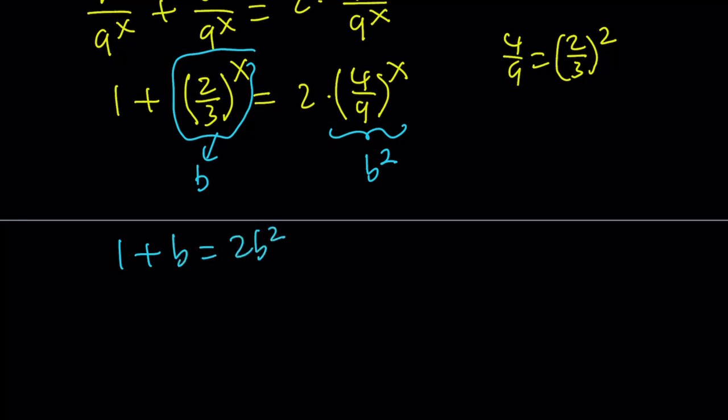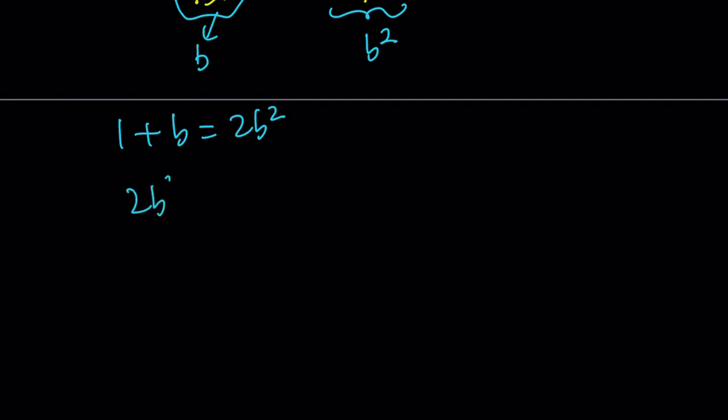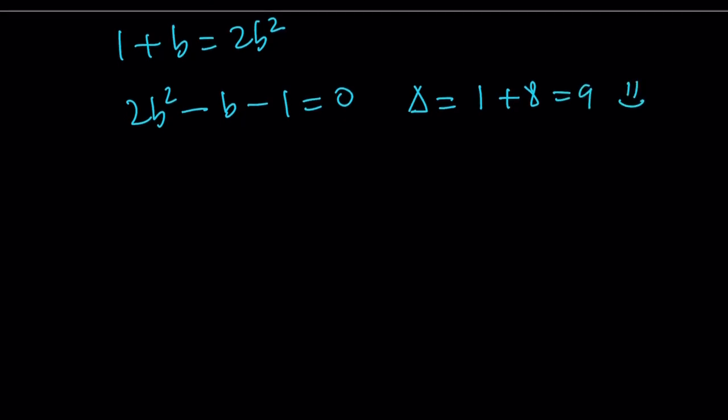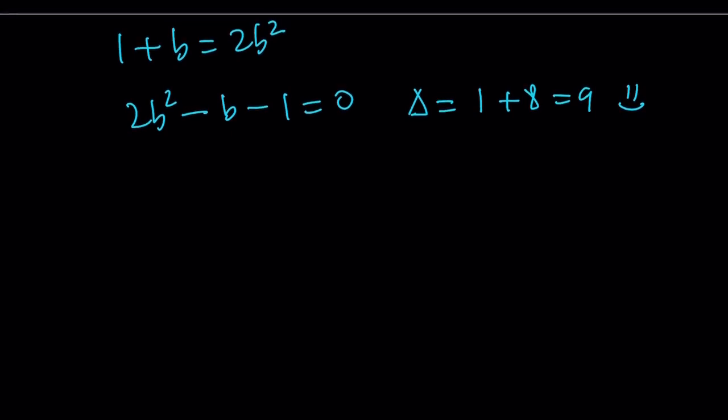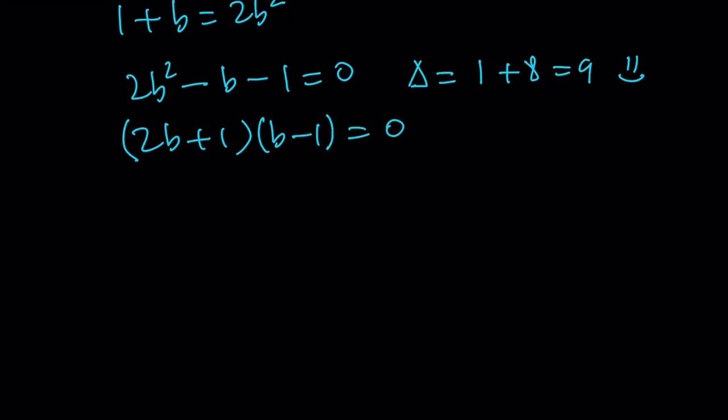2b or not 2b. So, let's go ahead and put everything on the same side. 2b squared minus b minus 1 is equal to 0. Let's check the discriminant, b squared minus 4ac. And that's a perfect square. Awesome. Nice. That means that our equation is factorable. Either through trial and error, or you can use the x method and factor it as follows. 2b plus 1 times b minus 1 equals 0. And this gives us two equations. This is a quadratic with real solutions. So b is either negative 1 half or 1.